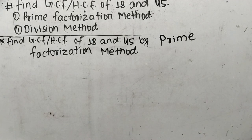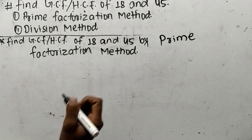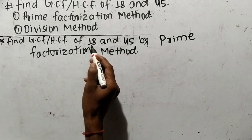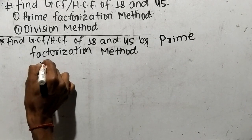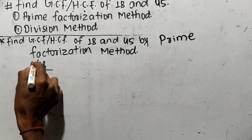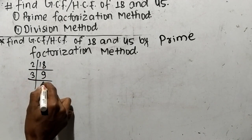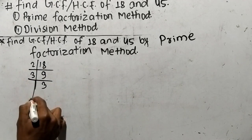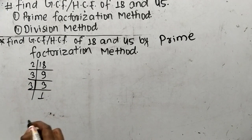While finding out GCF or HCF by prime factorization method, first of all we have to find out the prime factors of the given numbers. Here the numbers are 18 and 45. So let's find out the prime factors of 18. It is 2 times 9, which equals 18, like 3 times 3 equals 9, and 3 times 1 equals 3.